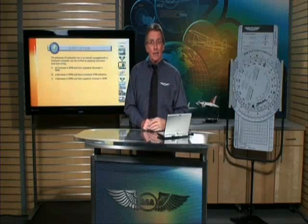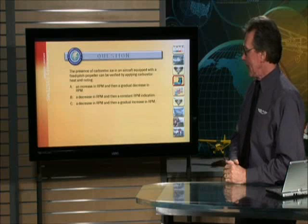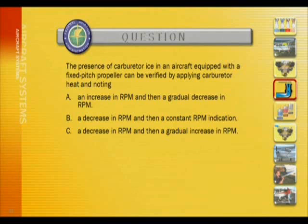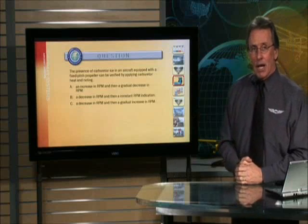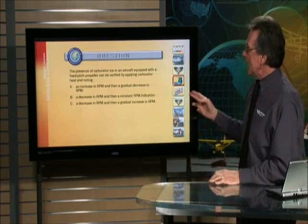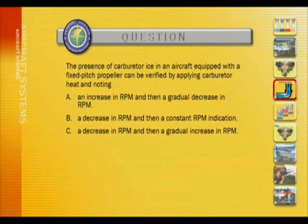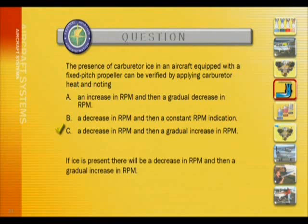Welcome back. Let's take this question on carburetor icing. The presence of carburetor ice in an aircraft equipped with a fixed-pitch propeller can be verified by applying carburetor heat and noting A, B, or C. The correct answer is C: a decrease in RPM and then a gradual increase in RPM. If ice is present, there will be a decrease in RPM and then a gradual increase in RPM.